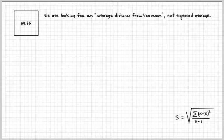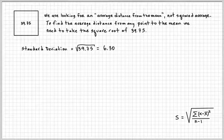How do you make, how do you go from a square to a line? Well, it turns out that you can find the average distance from any point to the mean. We need to take the square root of 39.75. When we take the square root of a number, the number is assumed to be a square. And when we take the square root of that number, it becomes a line, the average of the line.